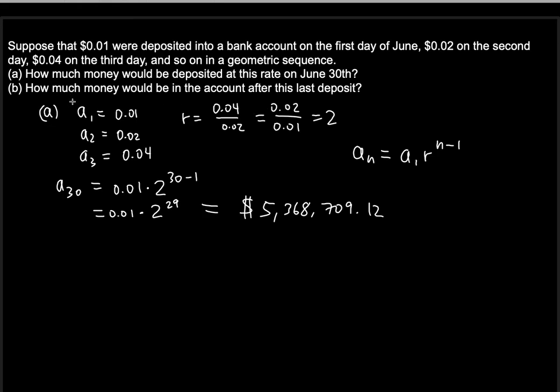Because this is what the question asks. How much money would be in the account after this last deposit? So you're asked to find the sum of the first 30 terms of this geometric sequence. And just to remind you, the formula that we're going to use to do that is going to be a different formula than the infinite sum. You recall one of the videos I've done, I've talked about how to find the infinite sum, infinitely many terms. Basically, all terms, like infinitely many terms in the geometric sequence sum, that's a different formula.